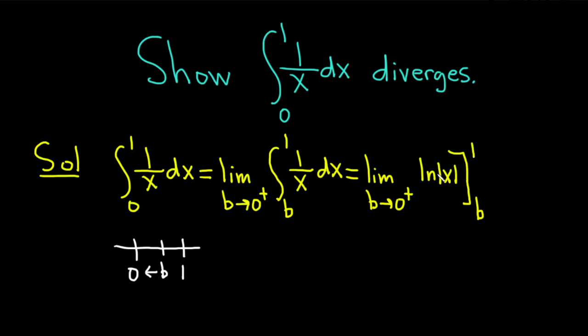The rule says that you plug in the 1 first, so this is equal to the limit as b approaches 0 from the right. Plugging in the 1 first, we get the natural log of the absolute value of 1, minus the natural log of the absolute value of b.